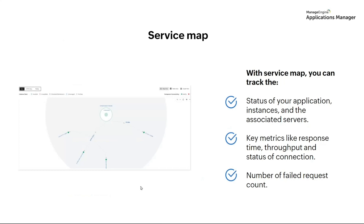The next feature is the service map. The service map provides a complete overview of your application infrastructure along with its connections to other dependent resources. With the service map, you'll be able to view the status of your application and instances, and also view key metrics like response time, throughput, connection status, failed request counts, etc.